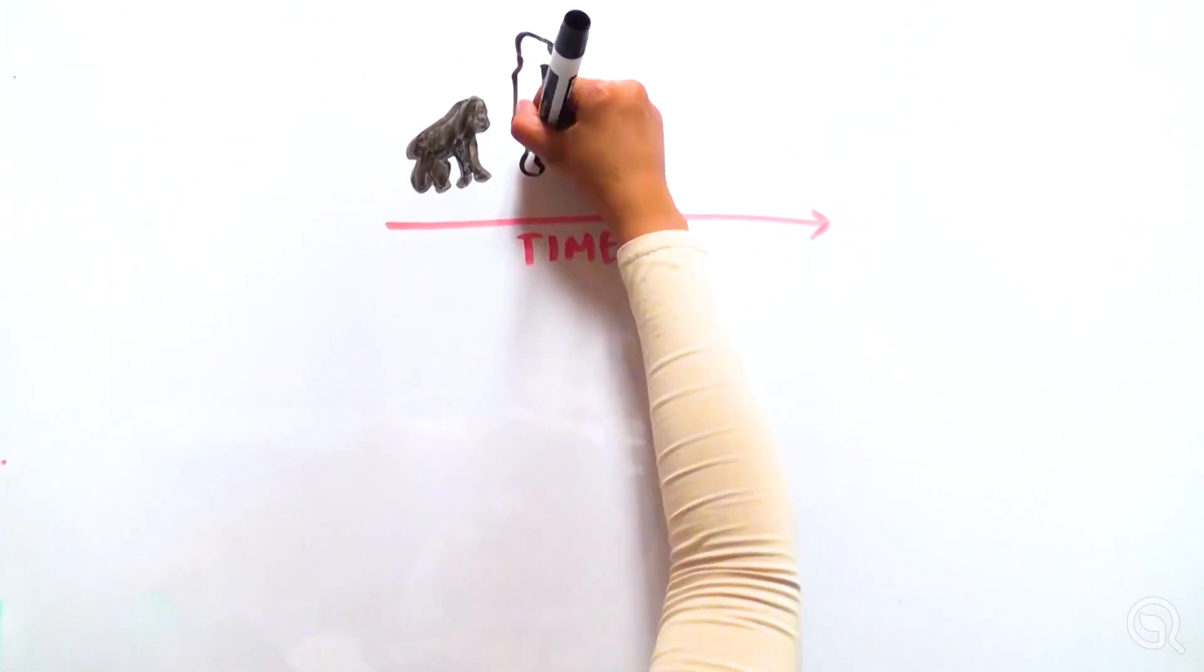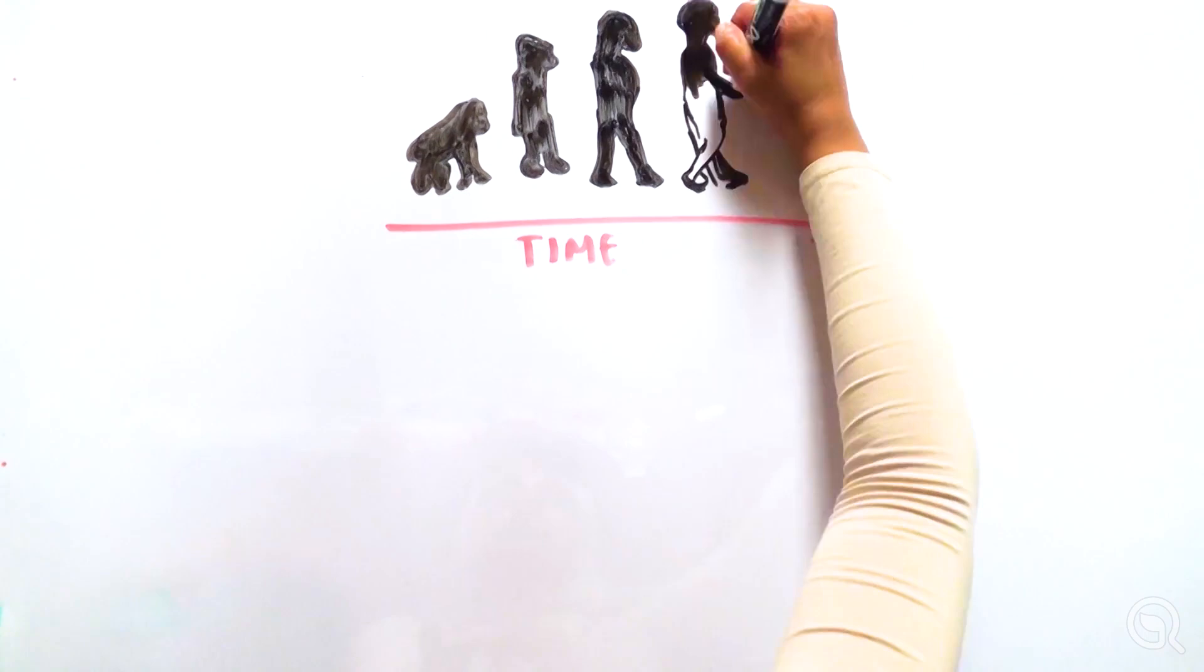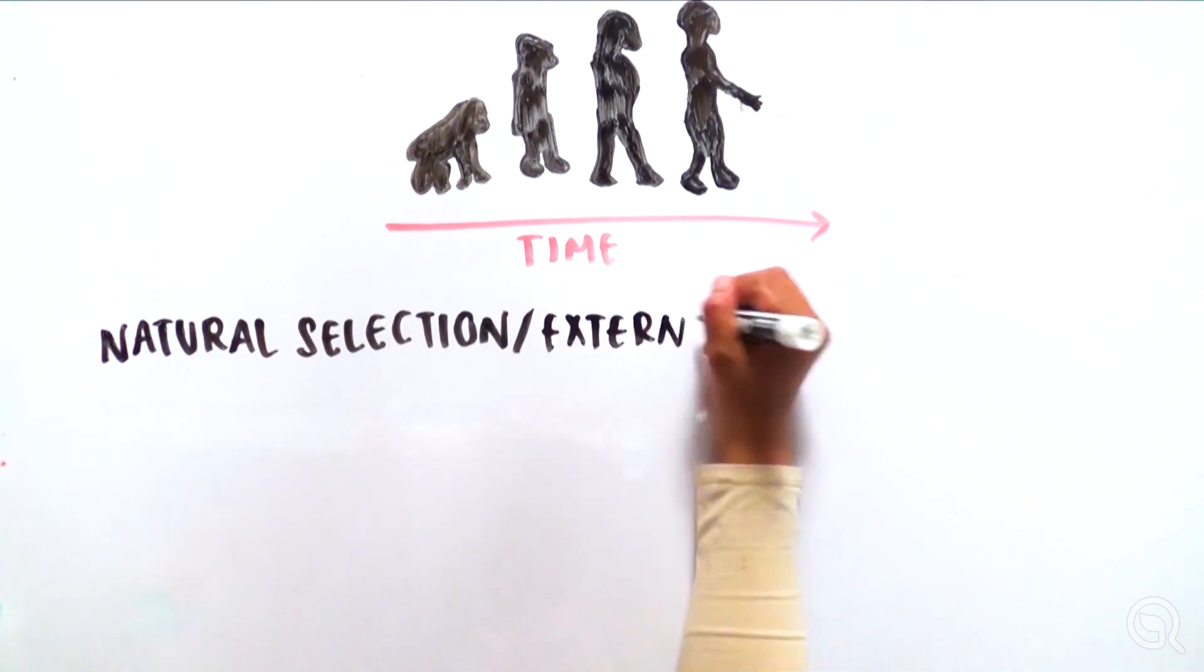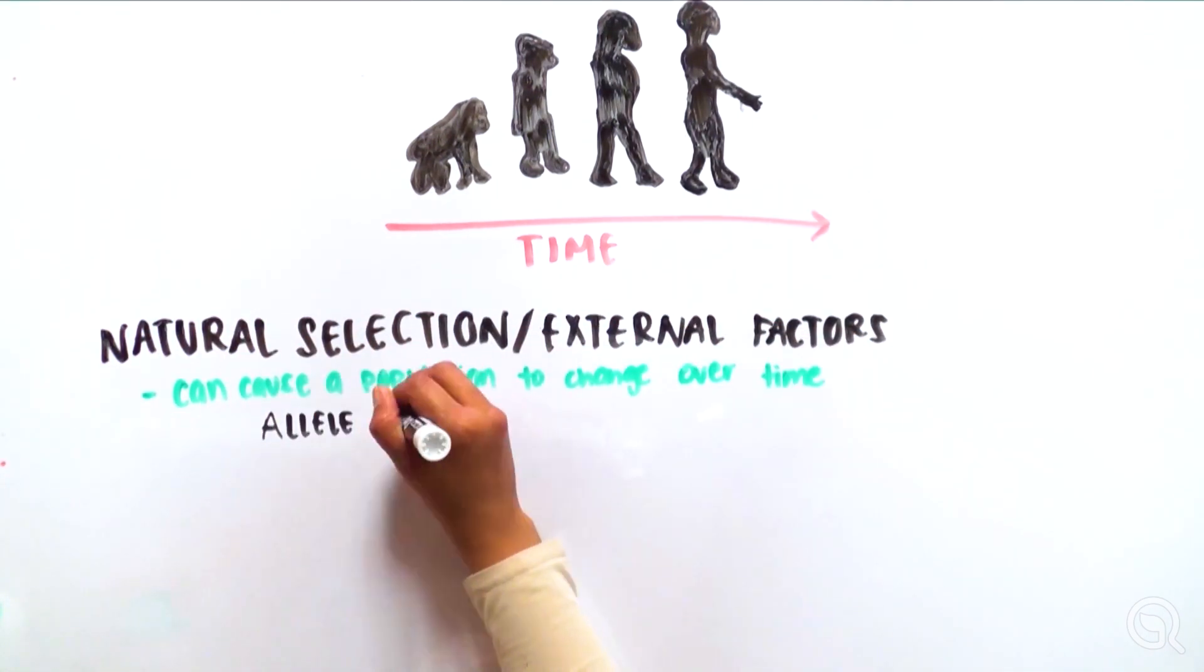All populations, including humans, evolve. This means the different forms of genes for a particular trait, or alleles, will change over time.